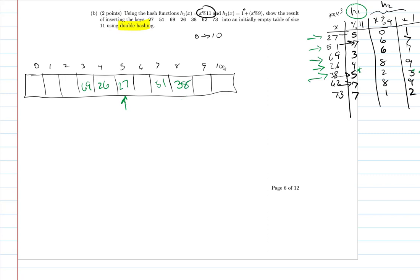Now 62 says go into position 7, so 7 is occupied. So 62, it looks like we have to use our second hash function, which is a skip number of 9. So we're going to increment this by 9, but we're actually incrementing it by 9 modulus, so that we end up wrapping around the table.